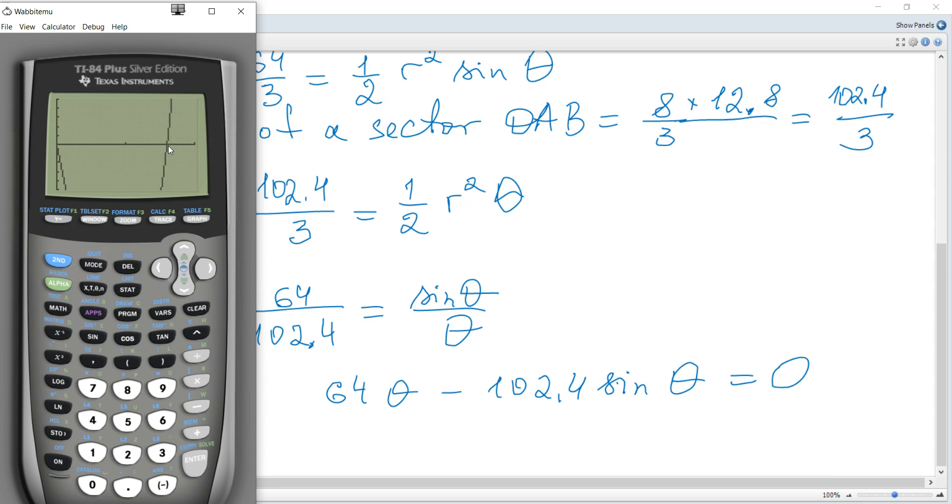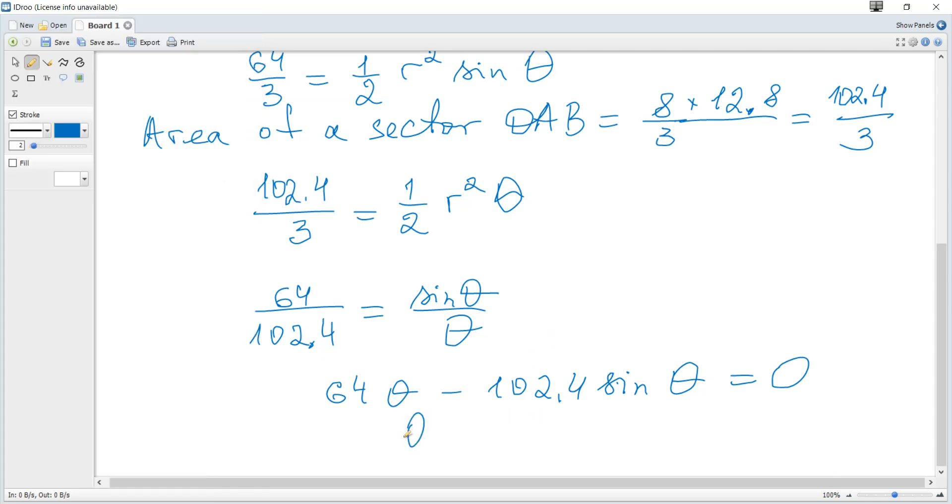And we need x-intercept to zero, left bound, and yes, this, write this, and guess this. So it's 1.599, 1.5993, 4 and so on, radians.